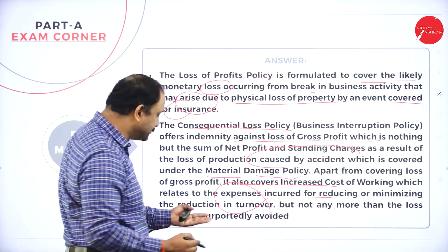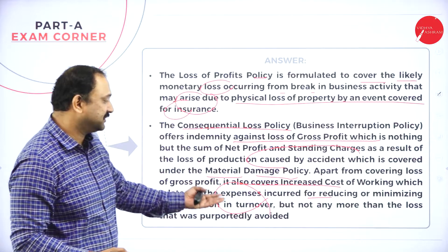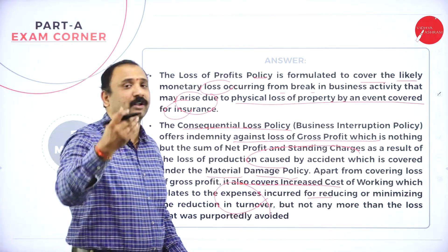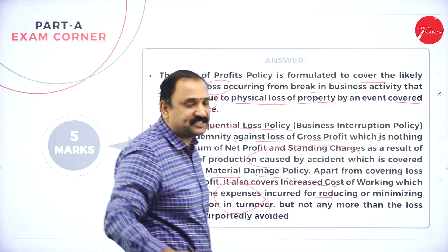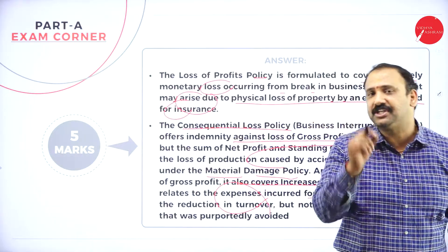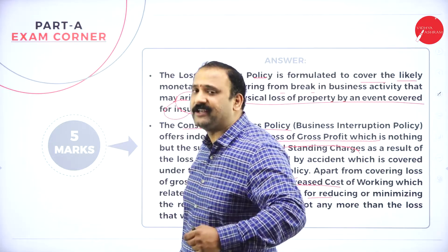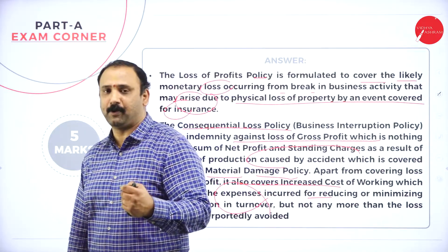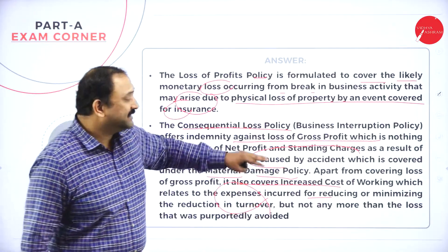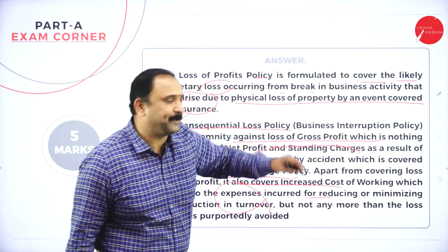Apart from covering the loss of gross profit, it also covers increased cost of working, which relates to the expenses incurred for reducing or minimizing various factors affecting turnover, but not more than what was perfectly avoided. What happens here is that when we are talking about the loss, we must clearly mention in our paper how the company will come up with a policy to reduce the loss at any given point of time.